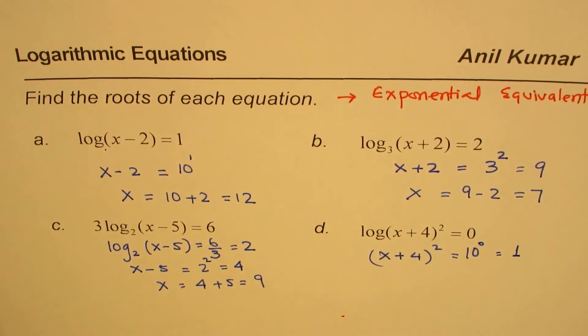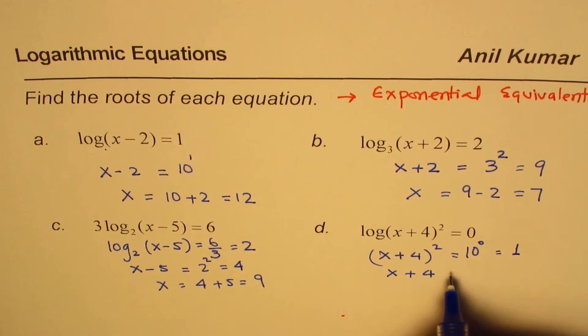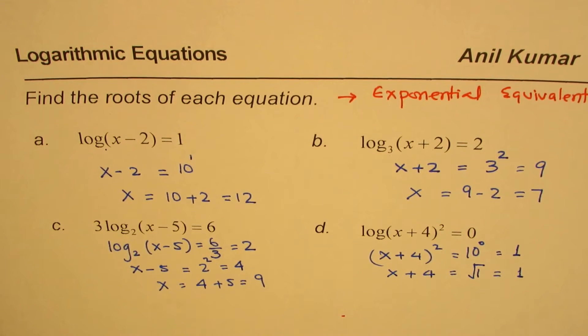So now when it is 1, then we'll do square root of this number. So we get x plus 4 equals square root of 1, which is 1.